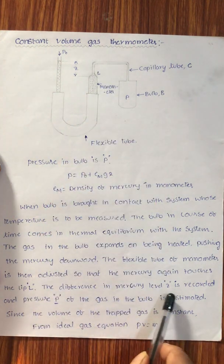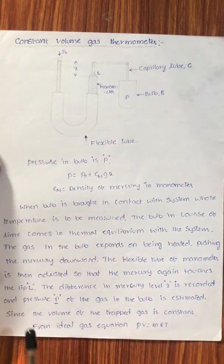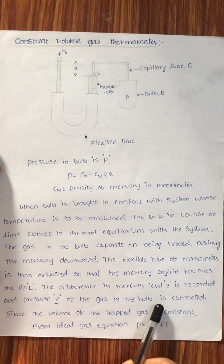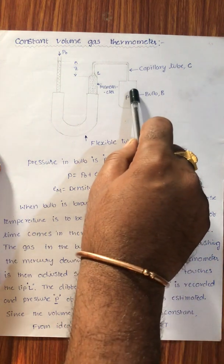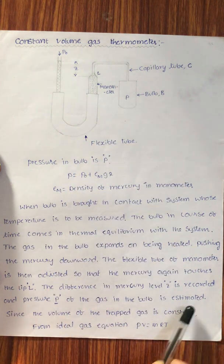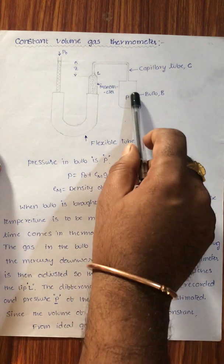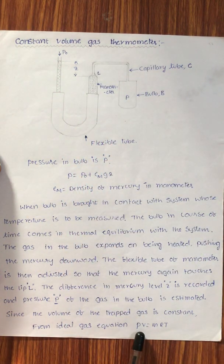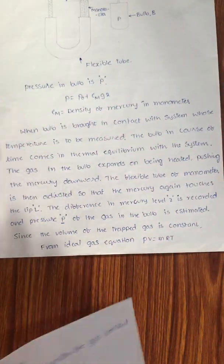The difference in mercury level Z is recorded — this Z value changes and is now recorded — and the pressure P of the gas in the bulb is estimated. Since the volume of the trapped gas in the bulb and capillary tube is constant, from the ideal gas equation PV = MRT, dividing by M gives PV = RT.